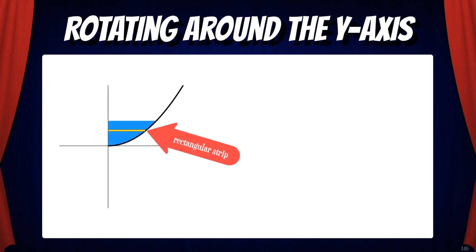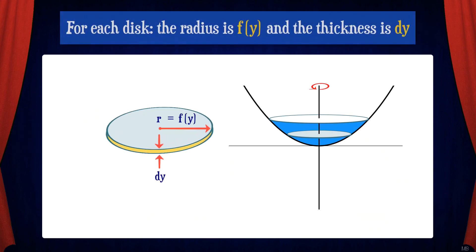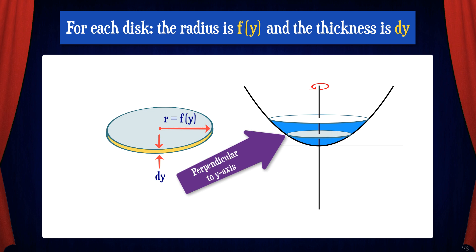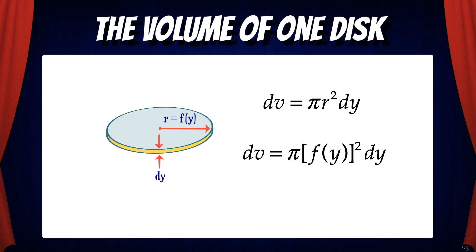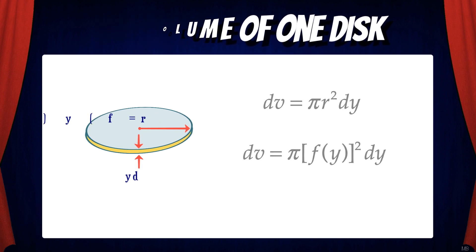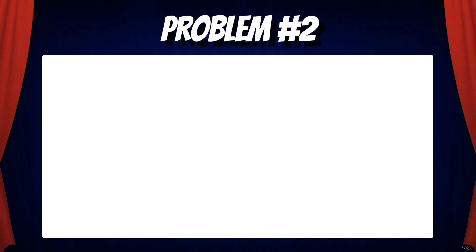Let's look at another example where we rotate rectangular strips within a shaded region around the y-axis to form disks. This gives us a solid of revolution around the y-axis. For each disk, the radius is f(y) and the thickness is dy. Note that the disk is perpendicular to the y-axis. Now we can calculate the volume of one disk: dv equals π r² dy, and since r equals f(y), dv equals π [f(y)]² dy. The volume of the entire solid is then π times the integral from a to b of [f(y)]² dy.